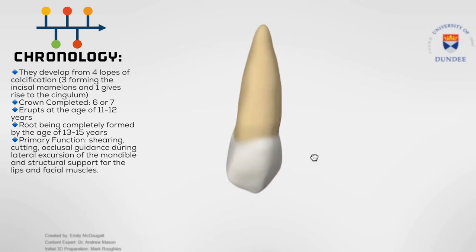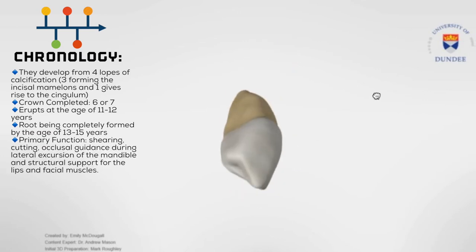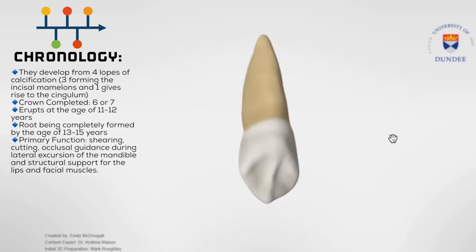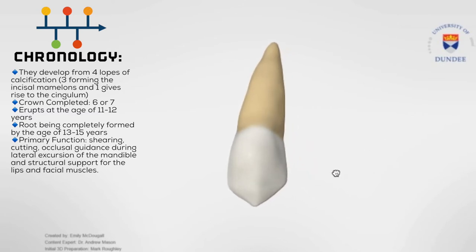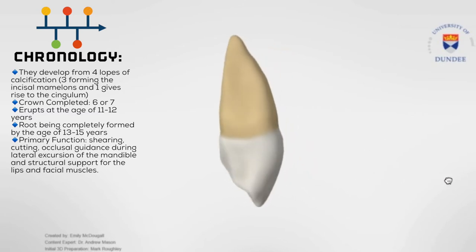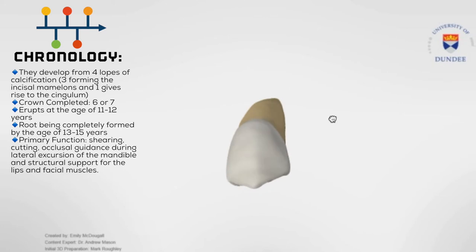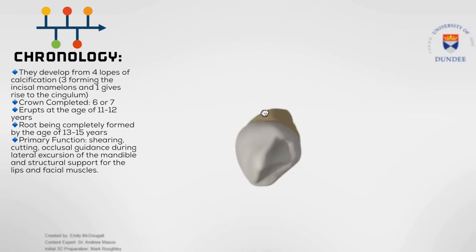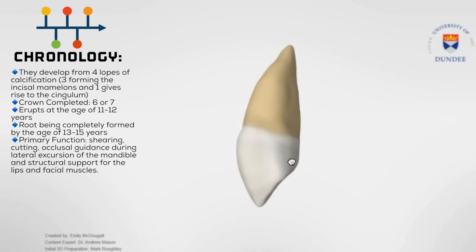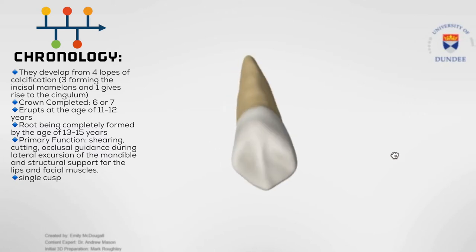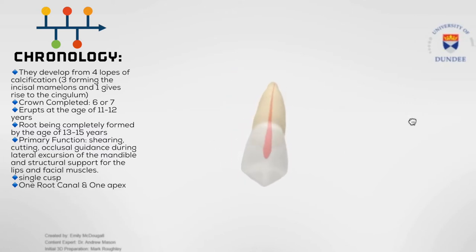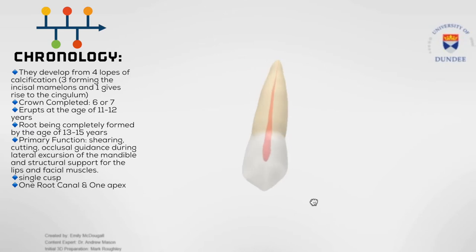The primary function is for shearing, cutting, occlusal guidance during lateral excursion of the mandible, and structural support for the lips and the facial muscles. There is a single cusp present on the canines, and in nearly all permanent maxillary canines there is one root canal with one apex.